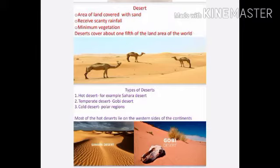A desert is a very vast area of land covered with sand. It is a dry land with scanty rainfall. Strong winds and dust storms are very common in the desert. Most of the hot deserts lie on the western sides of the continents.